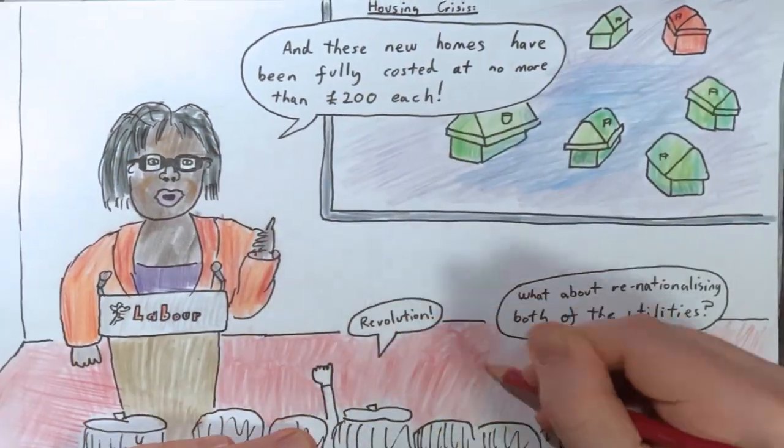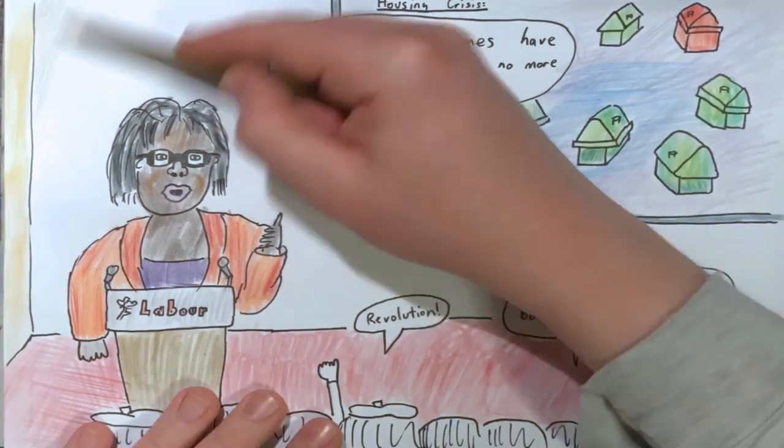Boris once lied about 300 million pounds on the side of a bus and his campaign for becoming Prime Minister ended up... well.